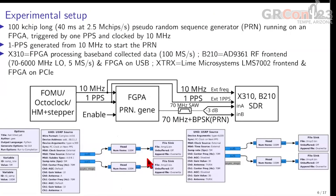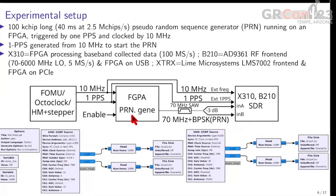This is the experimental setup that allows us to try to answer the question. We have our software-defined radio with dual coherent input — that's a very important aspect. It has to be a dual-input SDR, so we're investigating the X310, B210, or as examples the Lime Microsystems LMS7002 from the XTRX fitted software-defined radio. These two inputs will be fed the pseudorandom sequence generated by a field-programmable gate array (FPGA), and this FPGA will be clocked by the same time and frequency source as the X310, B210, or XTRX software-defined radio.